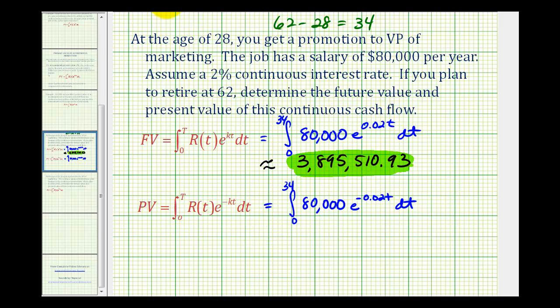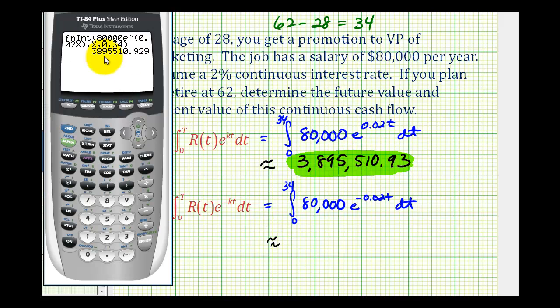Now let's determine the present value. So if we already have this in the calculator, we could just press second, enter, and then we can actually edit what we've typed in here. We just have to go up and change the exponent to negative 0.02 times X. So if we scroll up here, and then press second, delete for insert, and then the negative key, we save ourselves a lot of typing.